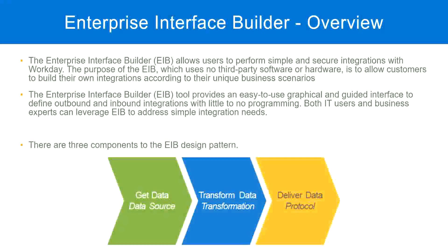What we are going to do is configure these three steps. Get data — where are we going to get the data from? That is something we have to configure. Do we need transformation? If yes, configure that; if no, leave it blank. Then deliver the data — how are we going to send it to an external system? We configure that as well. Once we do these three steps, our EIB is ready and we begin exchanging information between Workday and an external system.